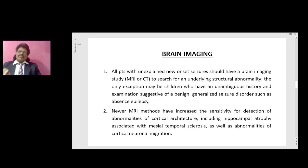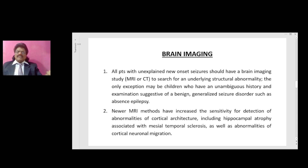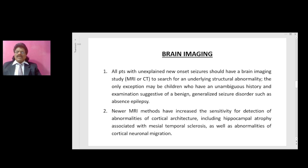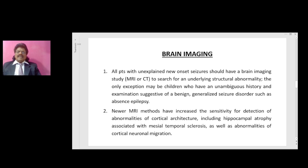Brain imaging: all patients with unexplained new-onset seizure should have a brain imaging study — MRI or CT — to search for an underlying structural abnormality. The only exception may be children with an unambiguous history and examination suggestive of a benign generalized seizure disorder such as absence epilepsy. Newer MRI methods have increased sensitivity for detection of abnormalities of cortical architecture, including hippocampal atrophy associated with mesial temporal sclerosis, as well as abnormalities of cortical neuronal migration.